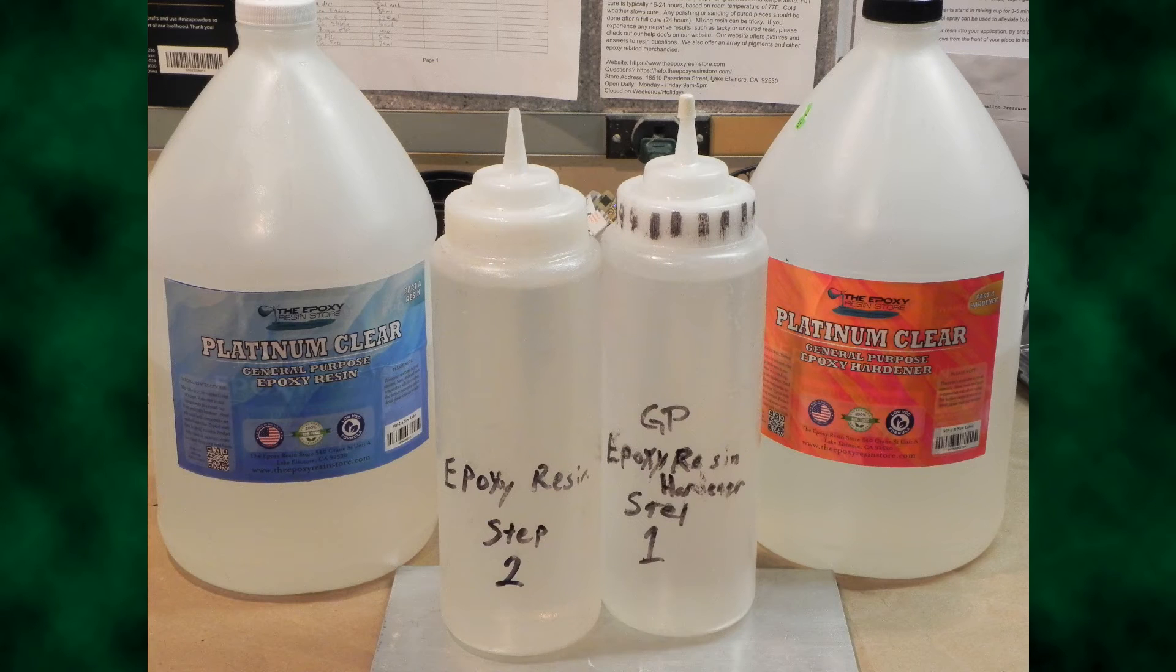Now comes the patience. Sorry, but this is the process that takes a while. Cure time for this resin is 12 to 16 hours usually. During this phase, the mica powder will migrate and settle out. This will be more evident in multiple colored pours. I know I keep saying this, but we'll get to those later.